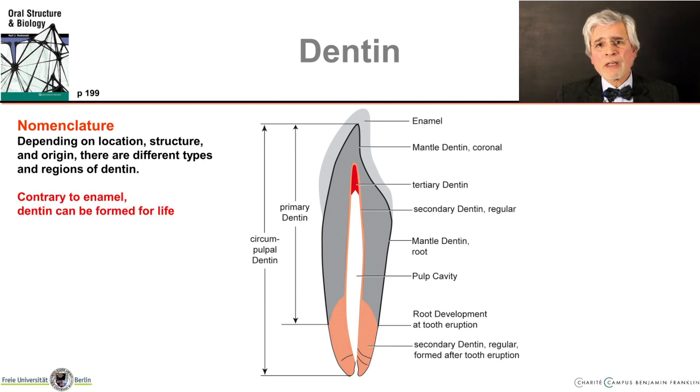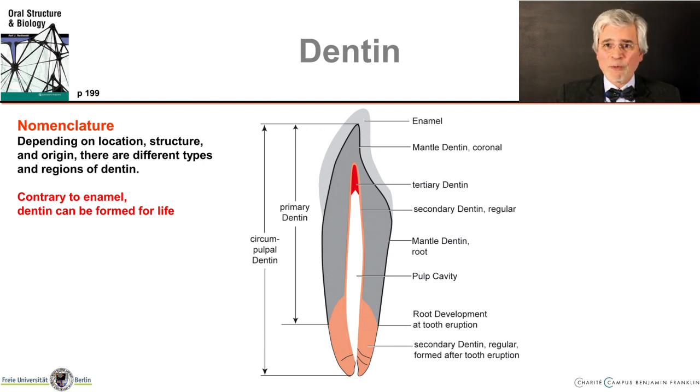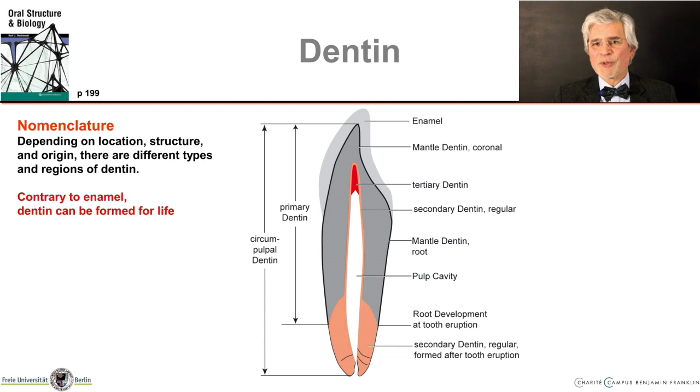And another very important difference to tooth enamel: dentine is formed for life — well, for as long as the pulp of the tooth is alive.